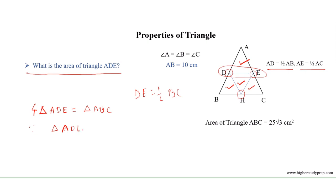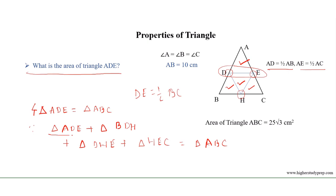So we can write that four times the area of triangle ADE equals the area of triangle ABC. We can see that triangle ADE plus triangle BDH plus triangle DEH plus triangle HEC equals triangle ABC, and the areas of all four triangles are equal.